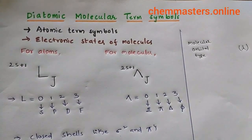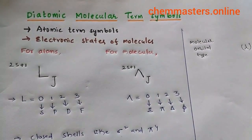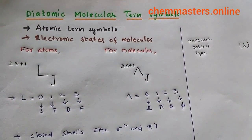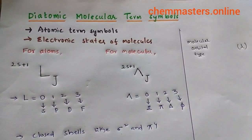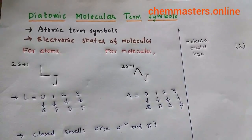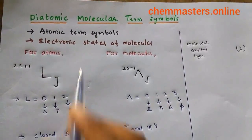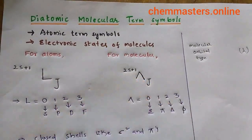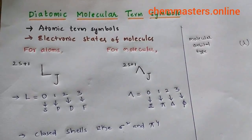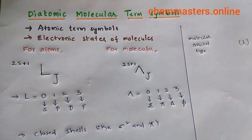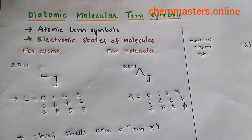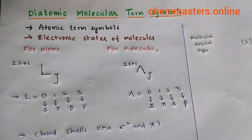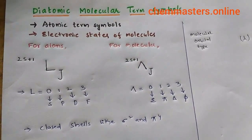Term symbols can be constructed much like those atomic term symbols, and these molecular term symbols give electronic states of molecules. By giving molecular term symbols, we can predict electronic states of molecules.